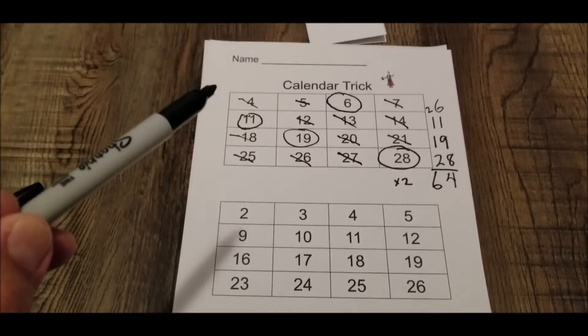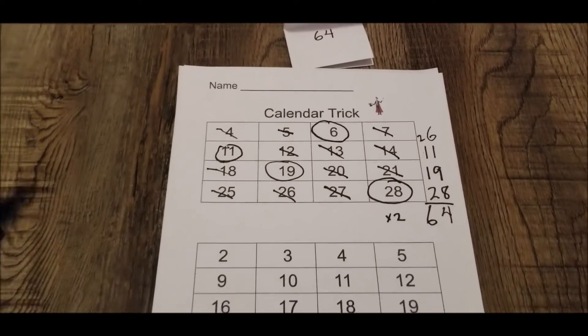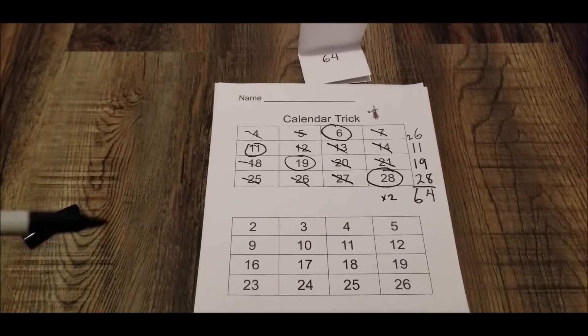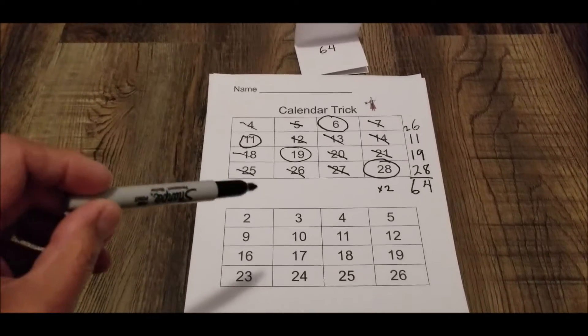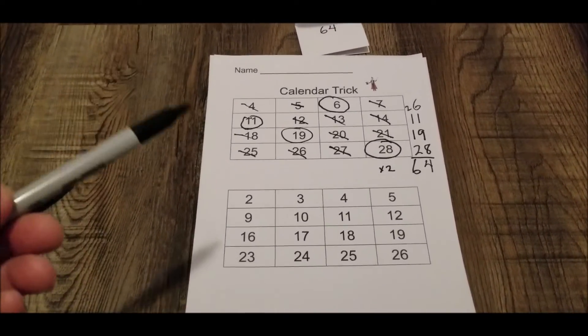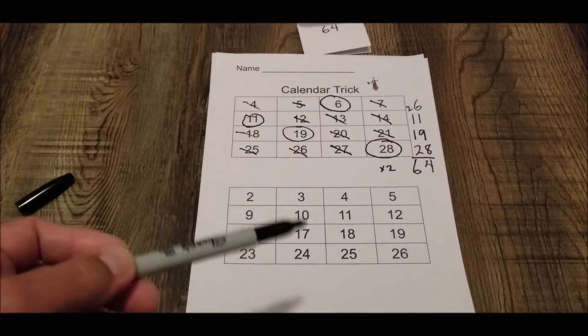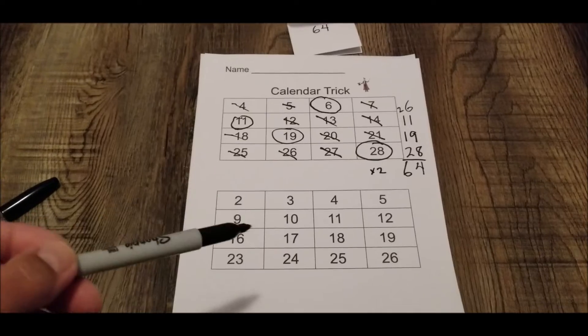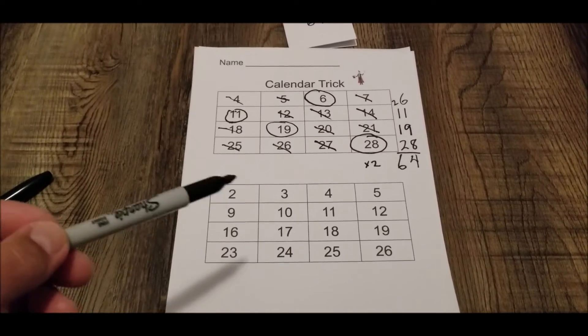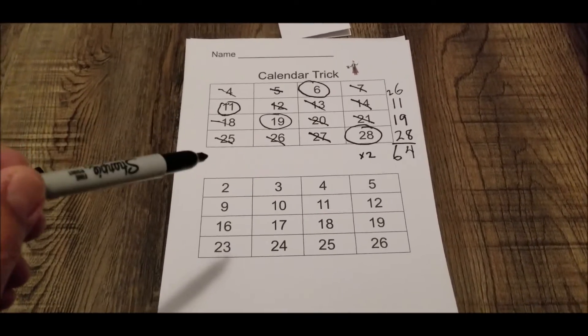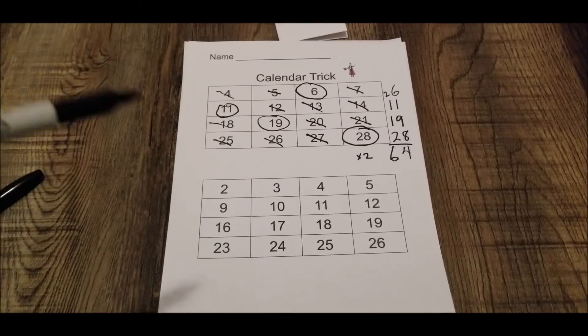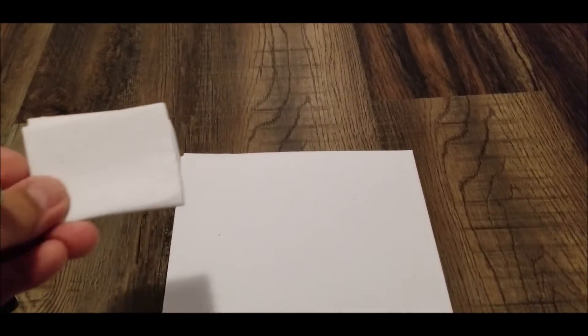So have some fun with the calendar trick. This is pretty awesome. Again, check the description. I left you a link on how to copy this. But you could seriously just grab a calendar. You know, one of those old calendars you keep around the house. Or you can just print these off the internet. But if you want mine, you can just print this right from the description.